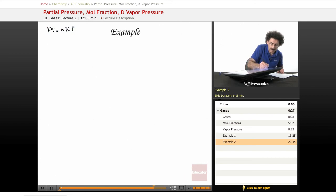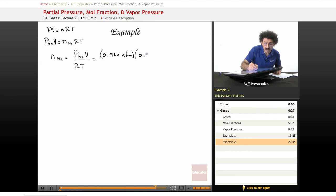PV equals nRT. The partial pressure of the nitrogen gas times the volume equals the number of moles of nitrogen gas times RT. Rearranging, the number of moles of nitrogen gas equals P_N2 times V over RT, and the pressure is 0.924 atmospheres times, and we collected 27.8 milliliters. So we want to convert that to liters, 0.0278 liters. The gas constant is 0.08206, and our temperature is 25 degrees Celsius, which is 298 Kelvin.